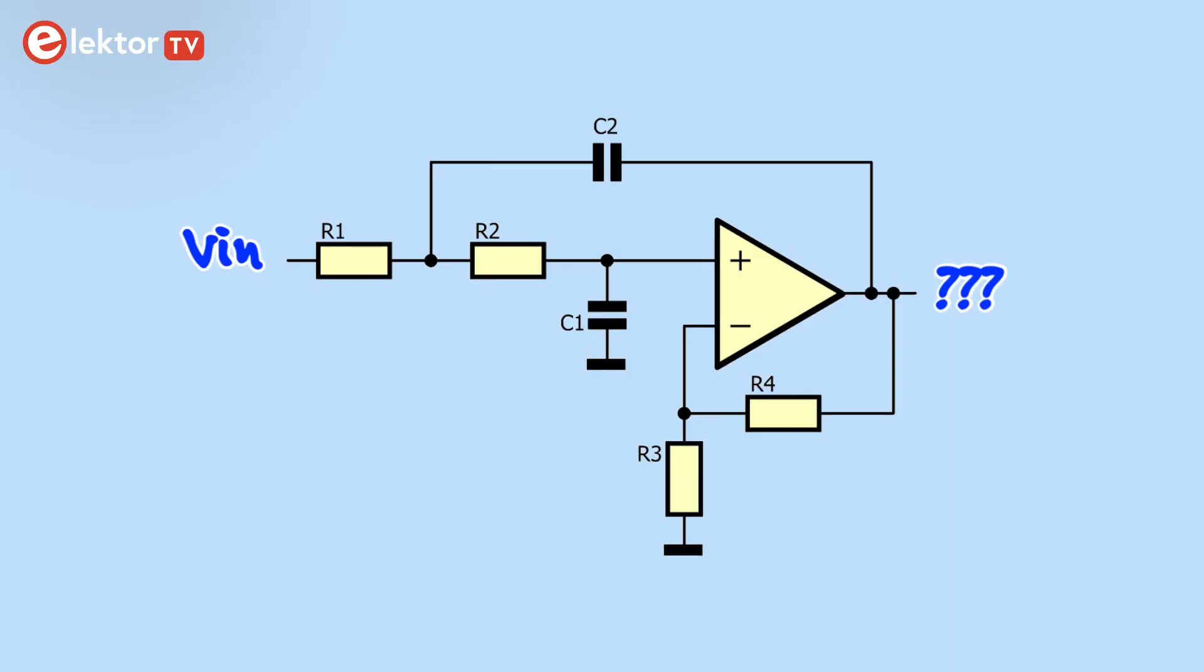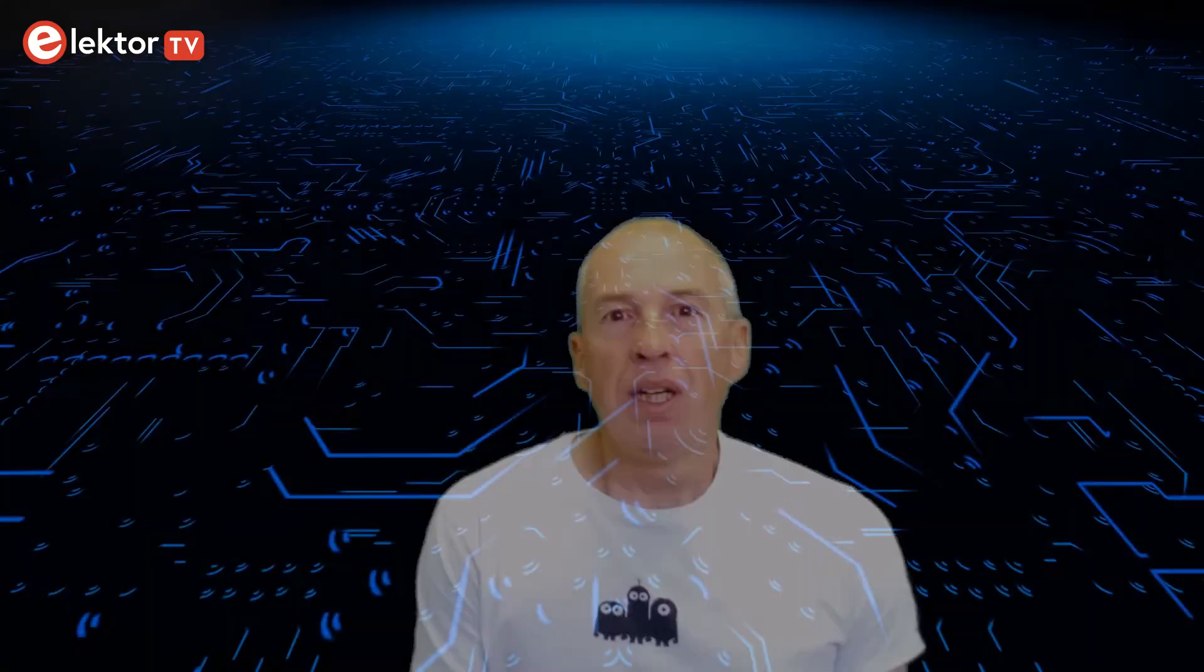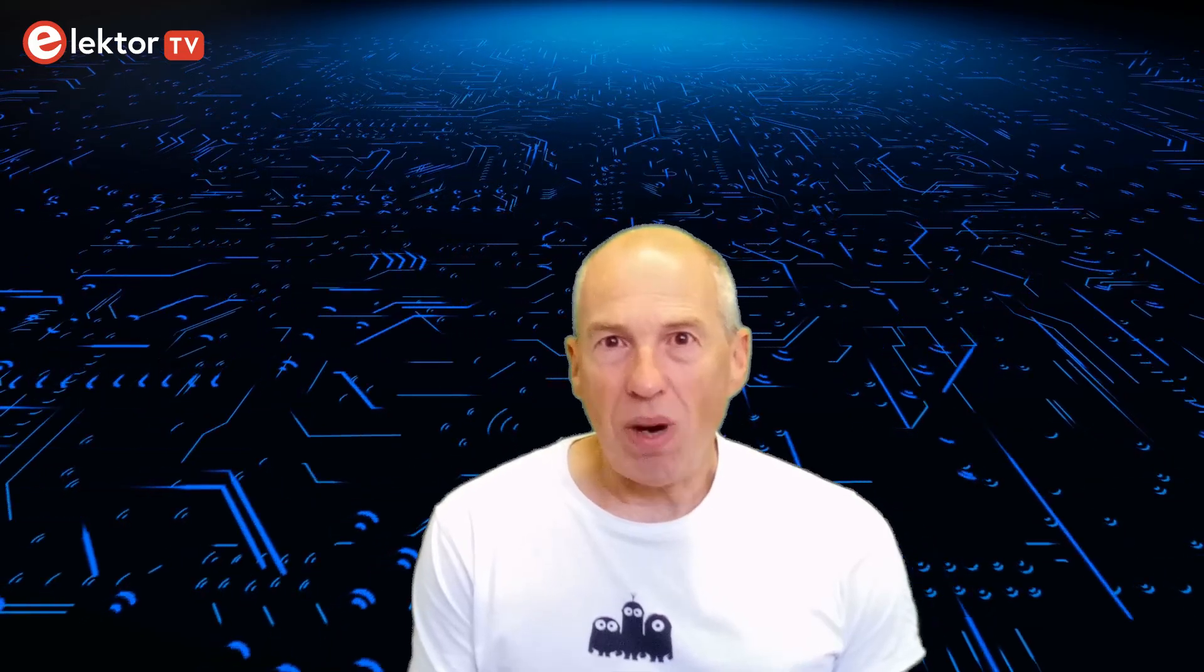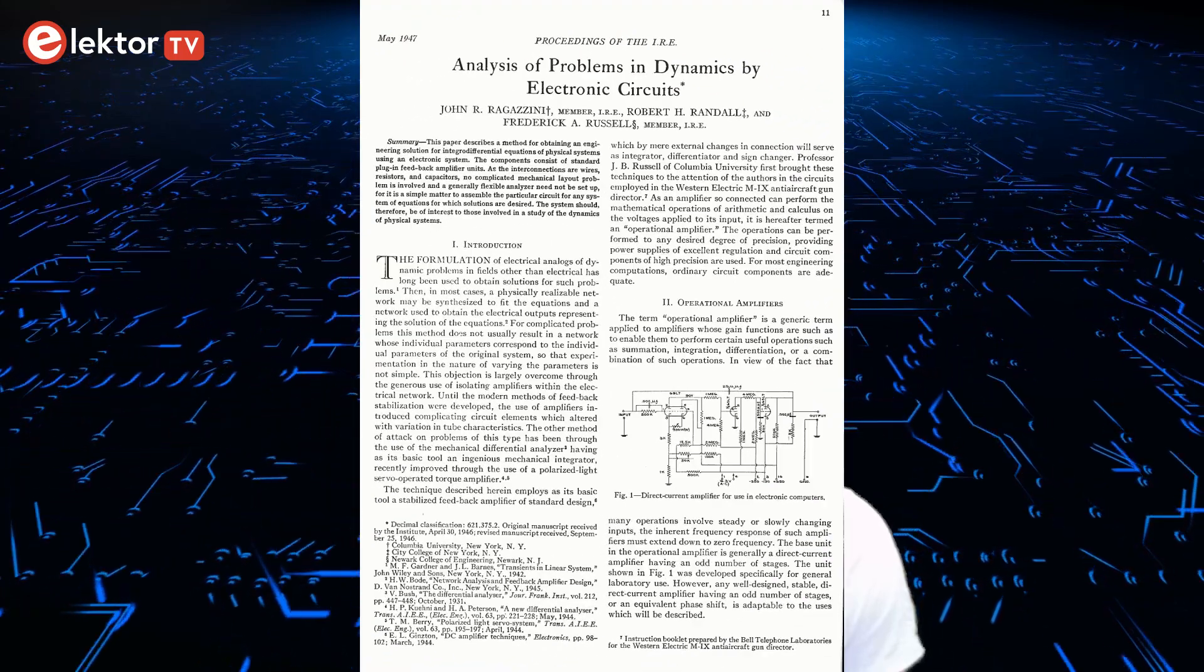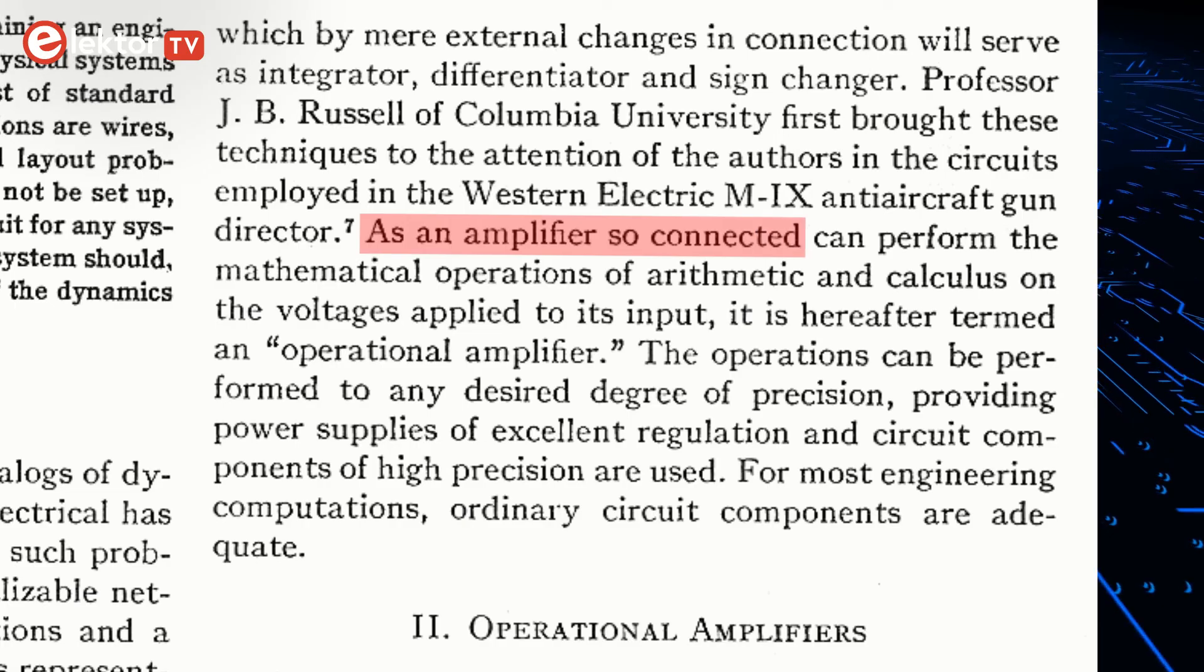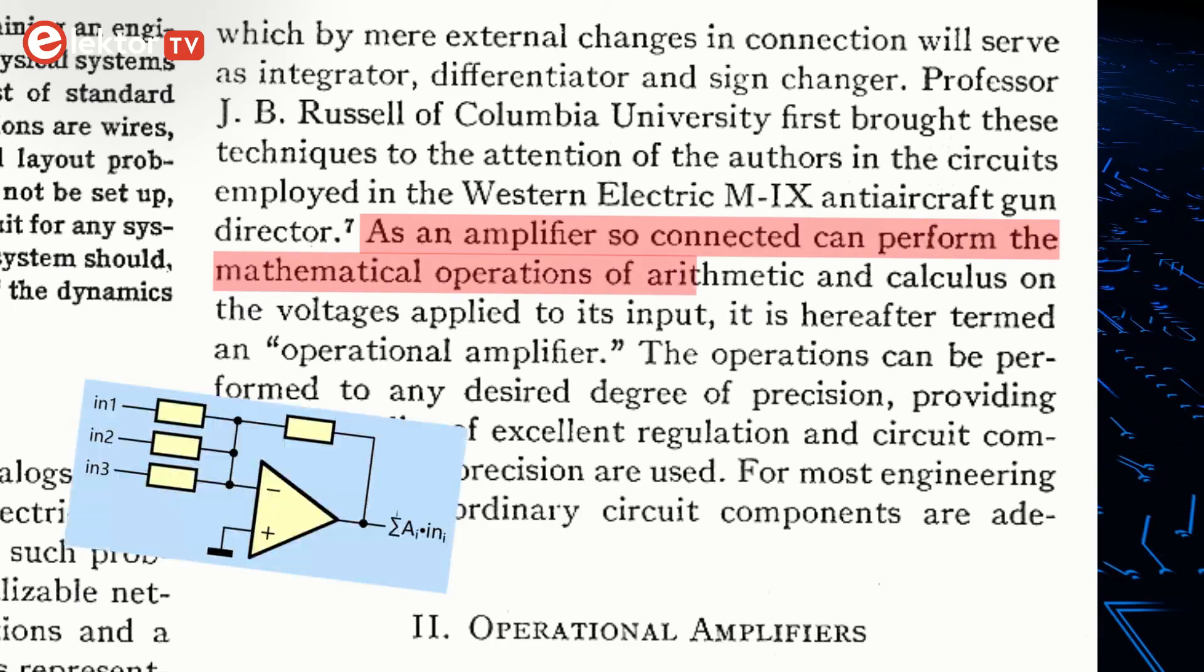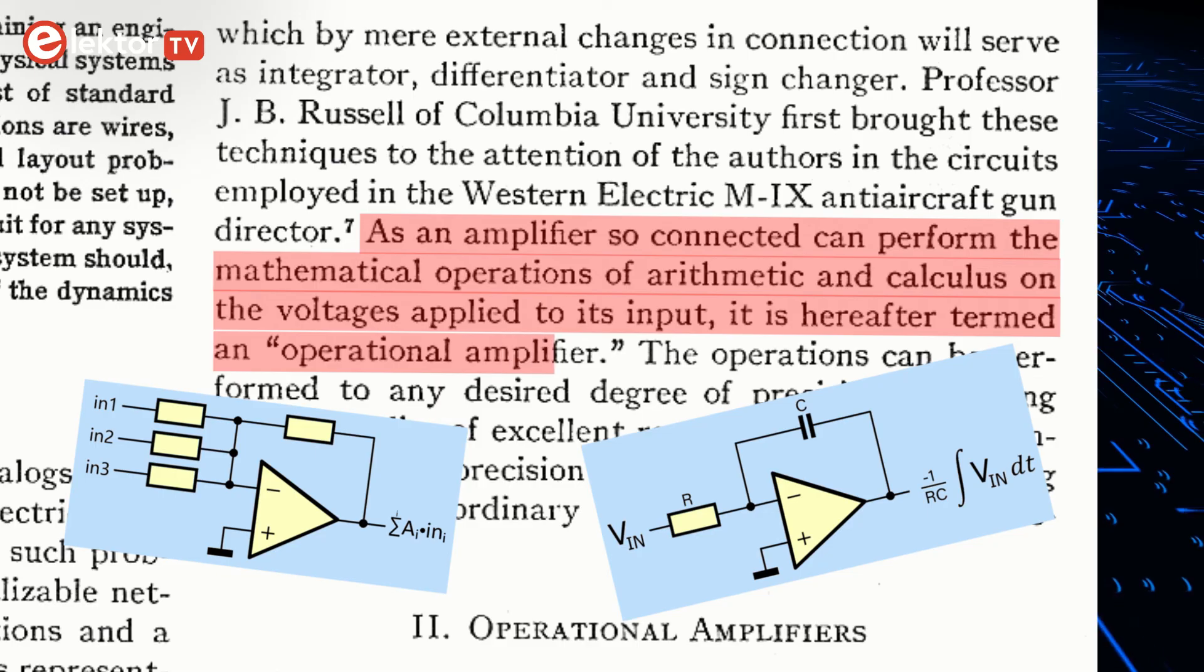Now that you know this, you can try to analyze and understand more complicated op-amp circuits. One question remains though, why is it called an operational amplifier? The answer is found in an article from 1947. Because an amplifier so connected, meaning using negative feedback, can perform mathematical operations of arithmetic and calculus on the voltages applied to its input, it is hereafter termed an operational amplifier.